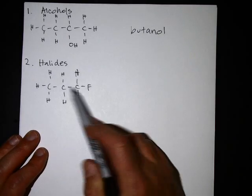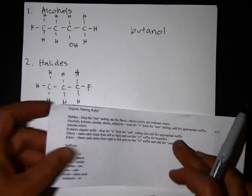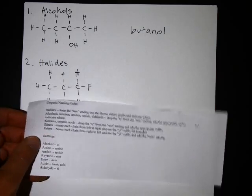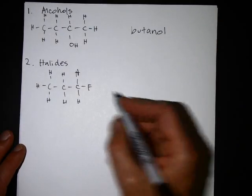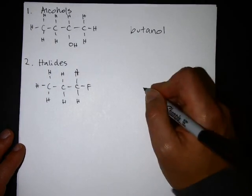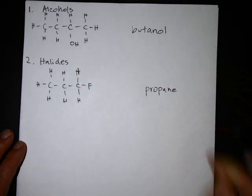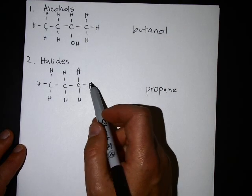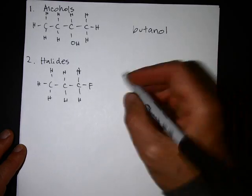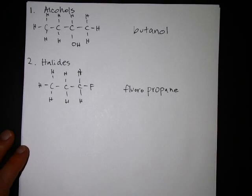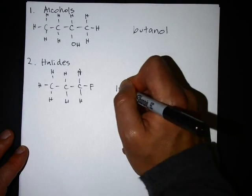This is fluorine attached to a carbon chain. The rules for naming a halide: keep the -ane ending and use the fluoro/chloro prefix, and indicate where. The prefix for fluorine is fluoro. Let's start the root name first — one, two, three carbons is propane. You keep the -ane ending, so it's propane. Now we say what this is and where it is. The odd man out is the fluorine. The prefix for fluorine is fluoro, and we indicate which carbon it's on — it's on the first carbon. That's the smallest number, so we call it one.